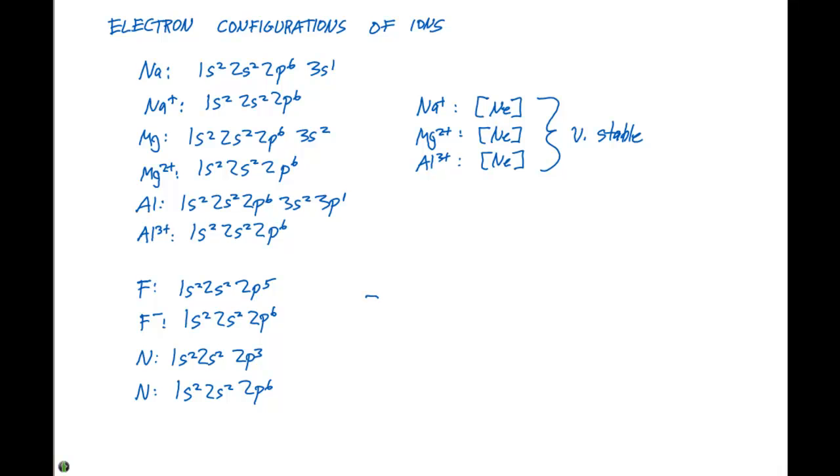So again, the F- and the N3- electron configurations also have the neon noble gas core. And in addition, these are very stable. So this is why the fluorine anion wants to gain one electron, and the nitrogen anion needs three electrons. It's because they want to reach that stable arrangement or that noble gas core of electrons.